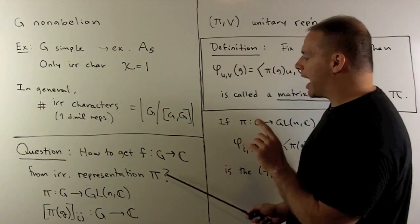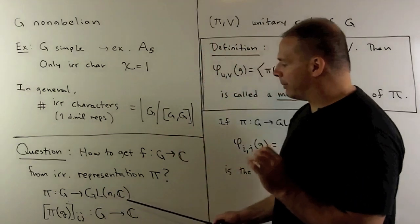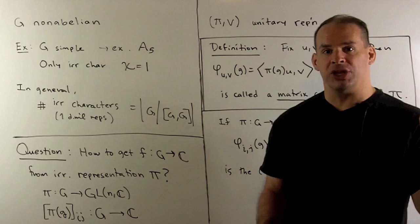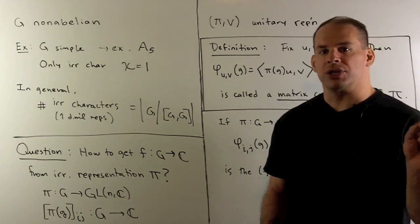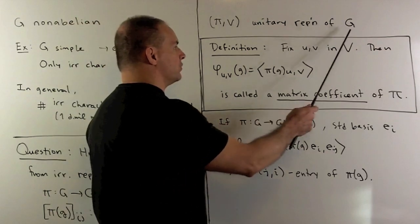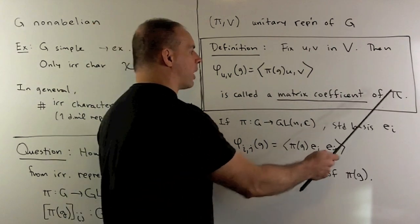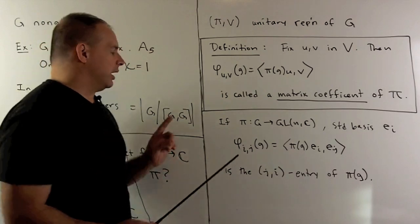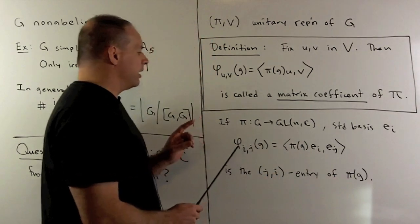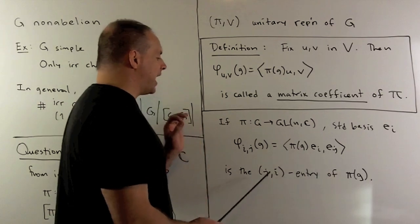If we have one of these representations, say pi, we choose a basis for the vector space — we'll have a map from our group into the invertible n-by-n matrices. If we focus on one row and one column, a single entry in the matrix, and let g vary, that gives us a function on G. We call such a function a matrix coefficient. More generally, for a unitary representation pi on V, we fix u and v in our vector space and define a function accordingly — that's what we call a matrix coefficient of a representation. If pi is realized on C^n with standard basis e_i, then the matrix coefficient with first slot e_i and second slot e_j picks off the j,i-th entry of pi(g).